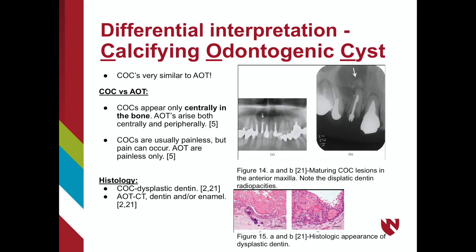Calcifying odontogenic cysts, also known as dentinogenic ghost cell tumors, should also be considered when assessing adenomatoid odontogenic tumors. COCs are slow-growing, benign cysts that produce a calcified matrix of dysplastic dentin. With similar distribution, radiopaque calcifications, and overlapping presentations, differentiating between AOT and COC lesions can be difficult. However, subtle differences exist: COCs can occasionally cause pain while AOTs are usually completely painless; COCs appear only centrally in the bone while AOTs are found both centrally and peripherally; and histologically, COCs are dysplastic dentin while AOTs possess connective tissue elements, dentin, or enamel-like calcifications.